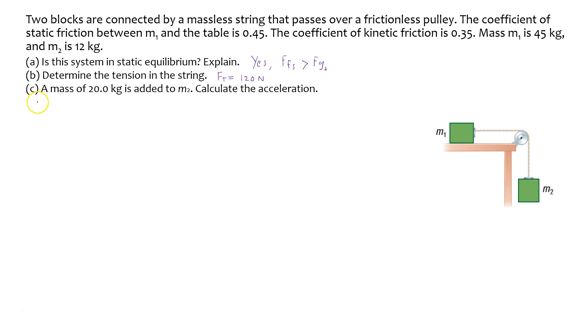Now I'm going to calculate the acceleration of the system if 20 kilograms is added to mass 2. So the new mass is going to be the original mass of 12 kilograms plus 20 kilograms, which gives us 32 kilograms. This block, block 2, is now going to weigh 32 kilograms.